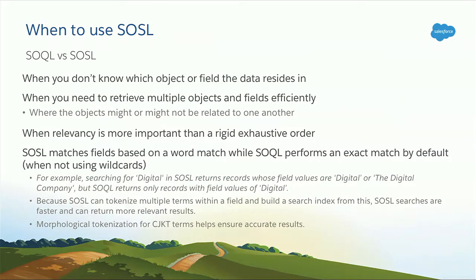A question we get asked very often is when to use SOSL versus SOQL. You use SOSL when you don't know for sure in which object or field the data is — search has a much wider reach and less structure. If you want to search across accounts, contacts, and leads all at the same time, you use SOSL. If you want to retrieve information from the same query across different entities or fields, SOSL is the way to go. SOSL is also search-based, so relevancy and ranking of results is very important. If you want to return the best account matching Acme, SOSL is better than SOQL — though it will be less exhaustive or precisely ordered than a traditional database query.